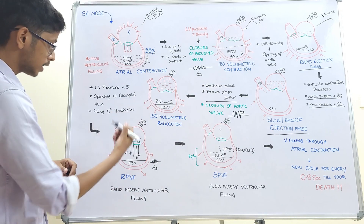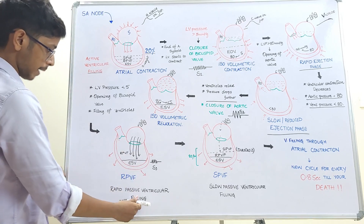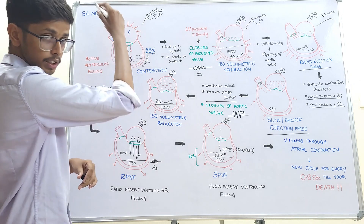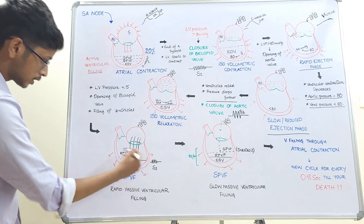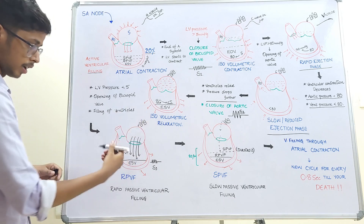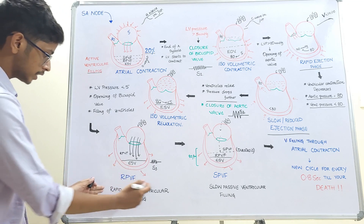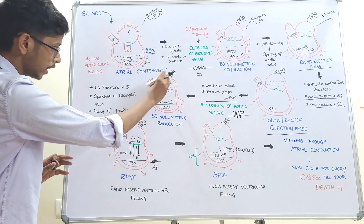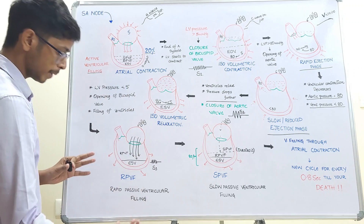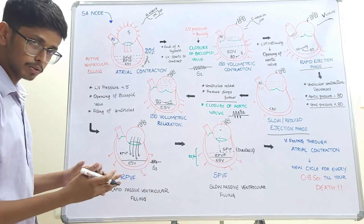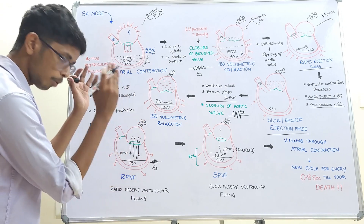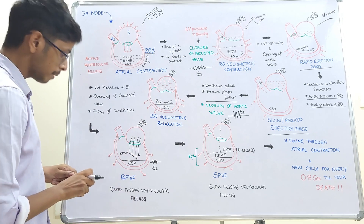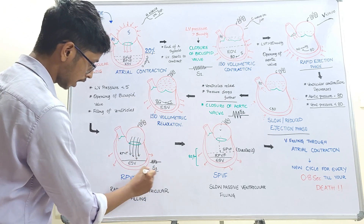Now the filling of the ventricles occurs in three phases: rapid passive ventricular filling, slow passive ventricular filling, and ventricular filling through atrial contraction. Immediately when the bicuspid valve opens, a large amount of blood that collected in the atria rushes rapidly into the ventricles — this is rapid passive ventricular filling. It is passive, requiring no atrial contraction, as a pressure gradient already exists. Sometimes this rush of blood may create the third heart sound, S3.